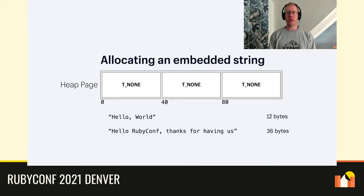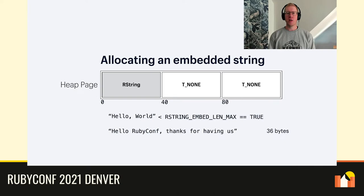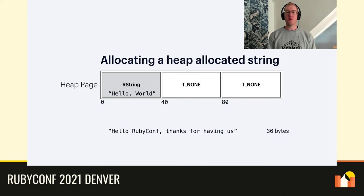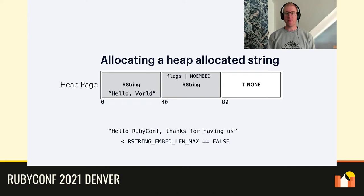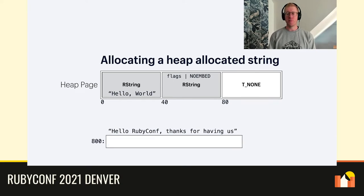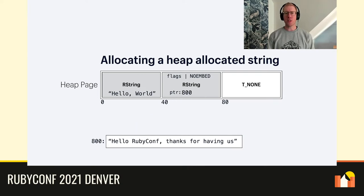When we allocate the string, Ruby checks the requested string length against an internal constant called rstring_embed_len_max. If the requested length is shorter than rstring_embed_len_max, it just pushes the string data straight into the remainder of the slot after the flags. When the string length is longer than rstring_embed_len_max, Ruby sets a bit on the R-value's flags called the no-embed bit. This signifies that the data inside the R-value is not the actual string, but a pointer to a separately allocated memory region. Ruby then uses malloc to reserve a new memory region outside of the existing heap, stores the address in the 24 bytes of the R-value, and copies the string data into that newly malloc'd memory.